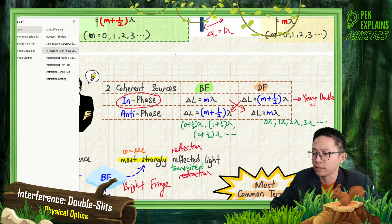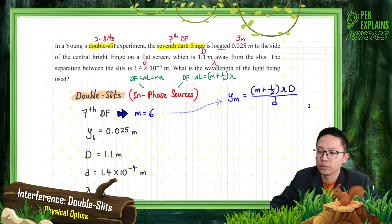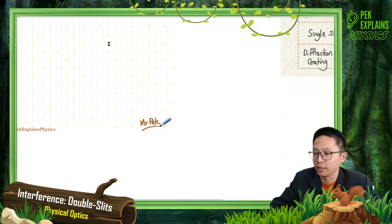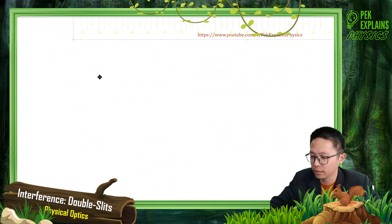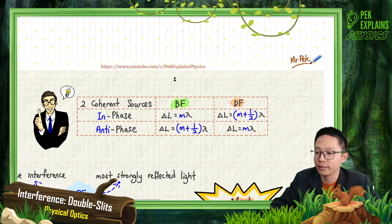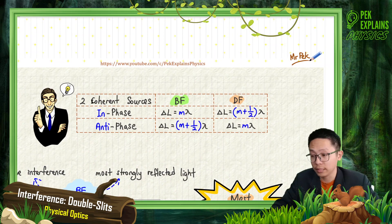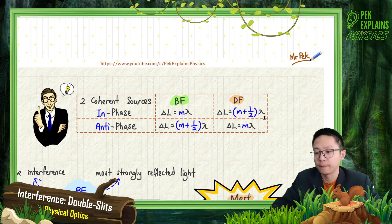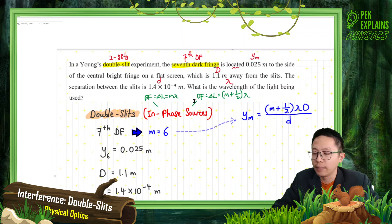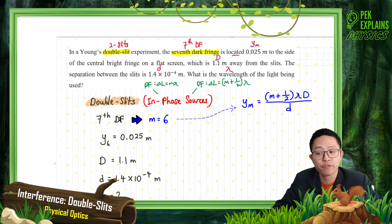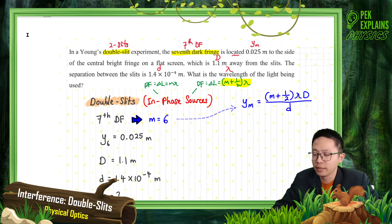Let me put this important diagram here. For in-phase source: to form bright fringe, delta L must be M lambda; dark fringe, delta L must be M plus half lambda. If out of phase, it's opposite. Since this is about the 7th dark fringe, we need to use the dark fringe formula, which is M plus half lambda, for in-phase sources. And because it gives us the position 0.025 meter, the formula for position Y_M uses M plus half lambda.